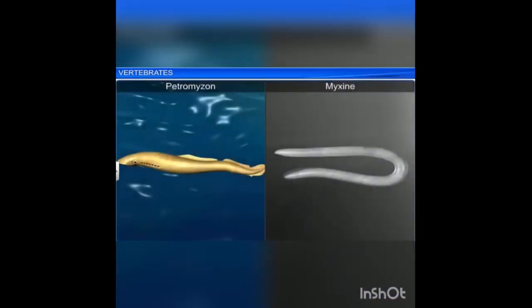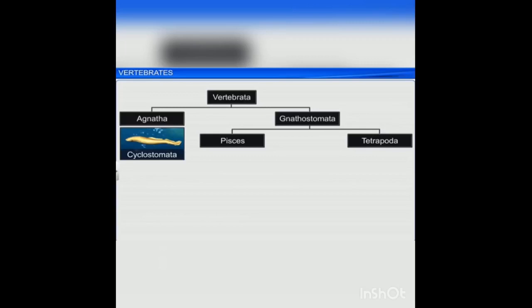Petromyzon and Myxine are the examples of Cyclostomata. Gnathostomata includes jawed vertebrates with paired appendages. There are two classes — fishes and tetrapods.